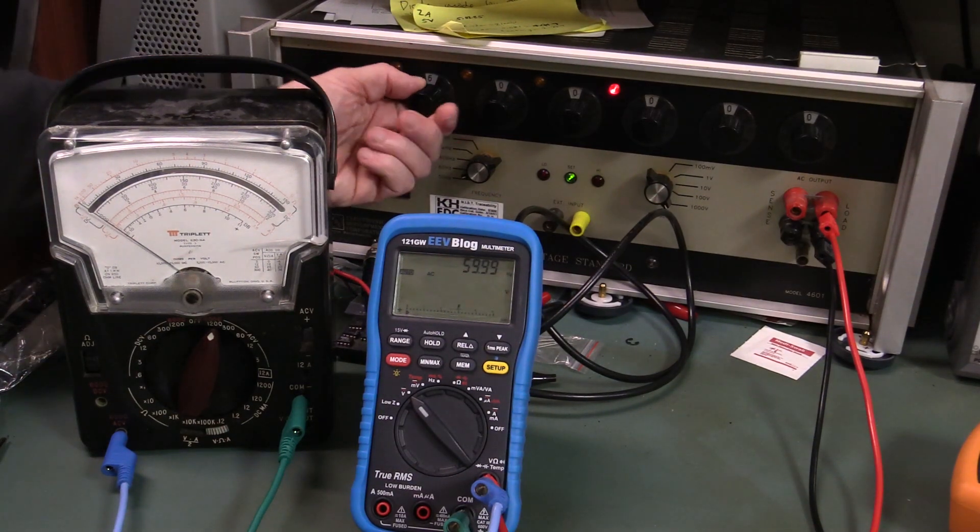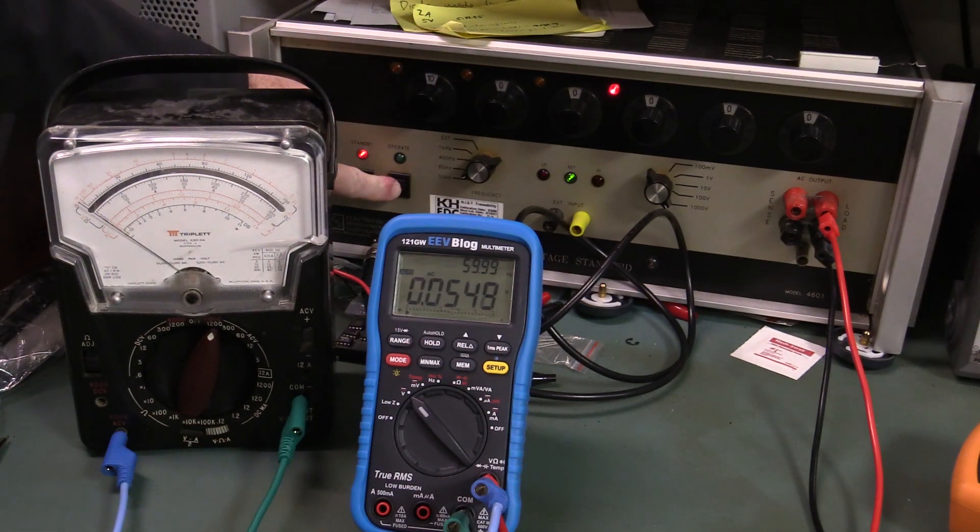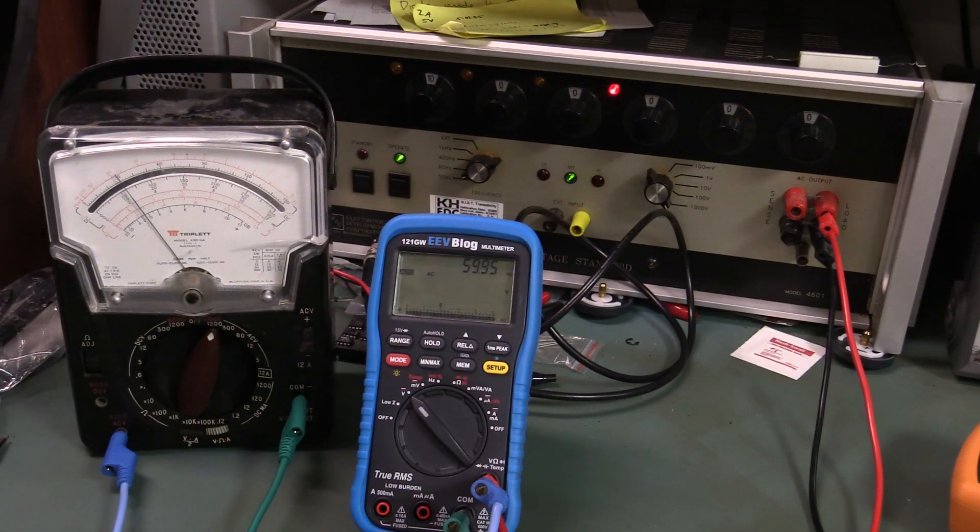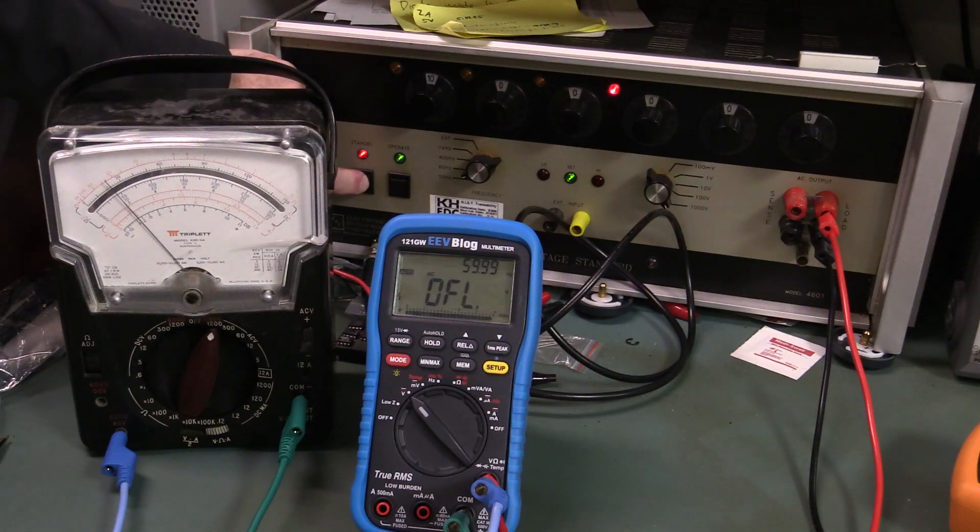And I can't just switch it because it'll automatically switch off. But let's go up to a thousand volts AC. Remember this is AC, so the peaks on the DC are much higher. And of course this is actually much higher than its 600 volt AC rating, and it survives just fine.